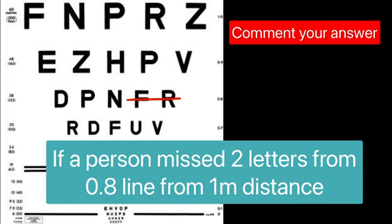Now I will leave this question for you to answer in the comment section. What will be the LogMAR visual acuity of a person if you miss 2 letters from 0.8 line from 1m of viewing distance?